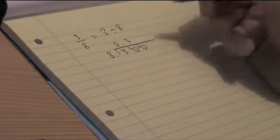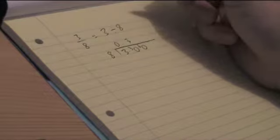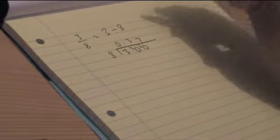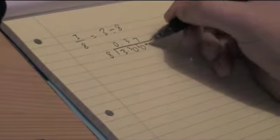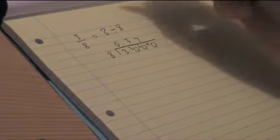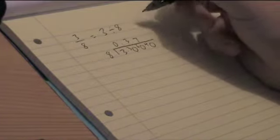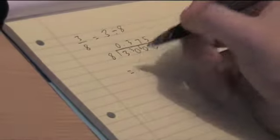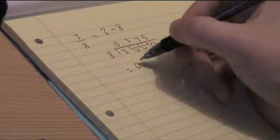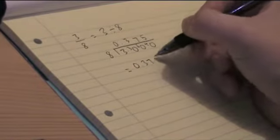Carry that again, put a 0 down. Now how many 8's are in 60? Well that's 7. And that's 56, so I have a remainder of 4. Finally, how many 8's are in 40? And that's 5. It's finally because I have no remainder this time, so I know I'm done. So 3 over 8 is equal to 0.375.